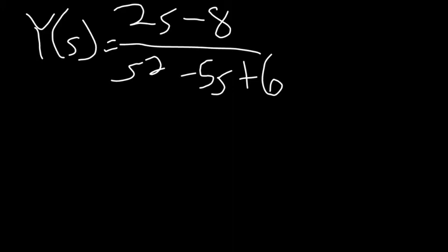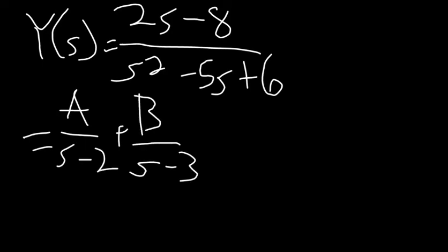Then we move everything so that Y(s) is by itself and it equals 2s minus 8 divided by s squared minus 5s plus 6. Using partial fractions we can then get it in the form of A over s minus 2 plus B over s minus 3.